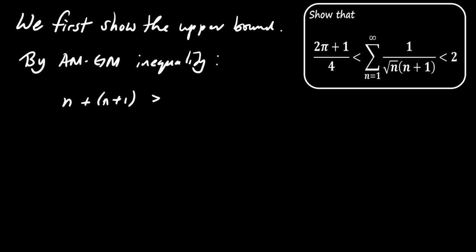By the AMGM inequality, we know that n plus n plus 1 is greater than or equal to 2 times the square root of n times n plus 1.